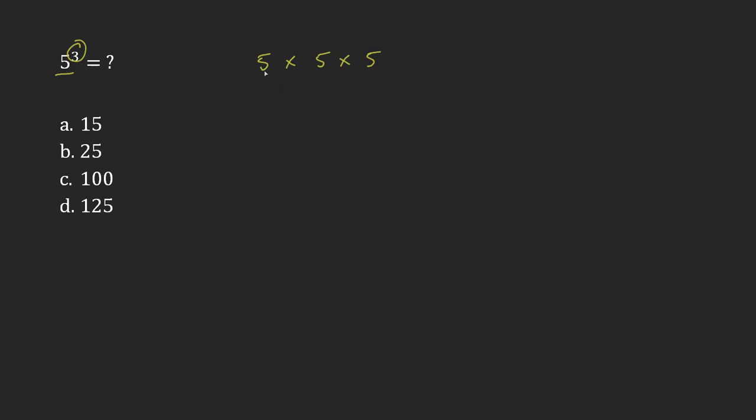And so this is pretty simple, it's just 5 times 5, that is 25, and if I multiply 25 times 5, that's going to give me 125. So that's all that you have to do with this.